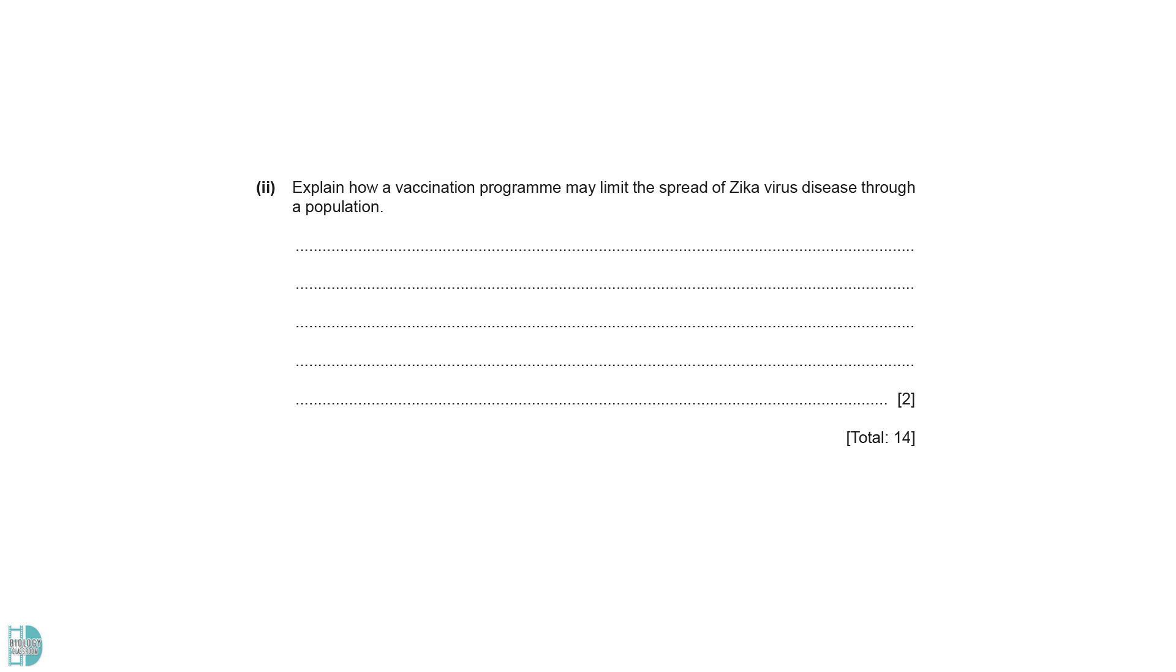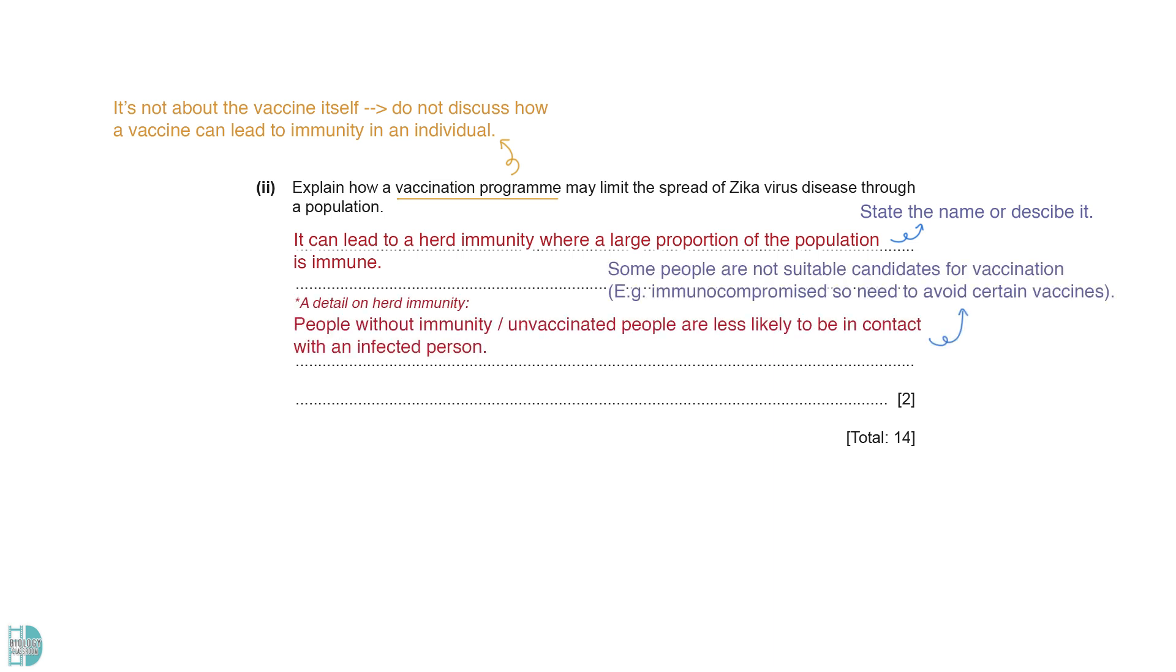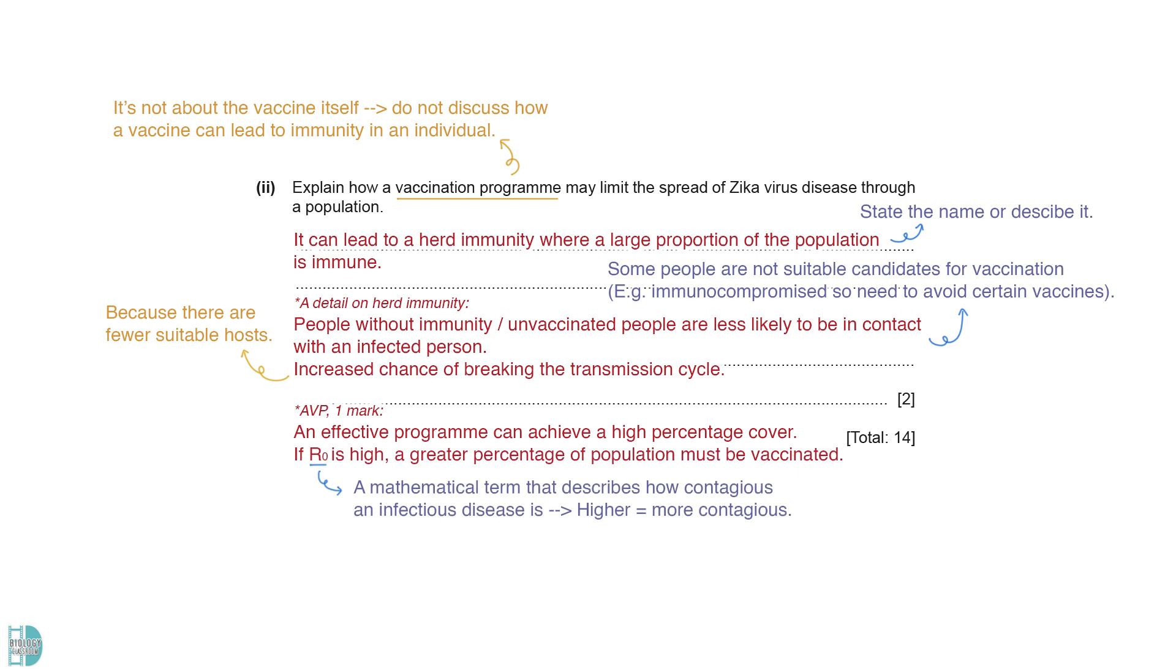Explain how a vaccination program may limit the spread of Zika virus disease through a population. This question talks about the program, not the vaccine itself. Therefore, do not discuss how a vaccine can lead to immunity in an individual. A vaccination program can lead to herd immunity where a large proportion of the population is immune. This will protect the unvaccinated people as they are less likely to be in contact with an infected person. This is important because there are individuals in a population who are not suitable candidates for vaccination. For example, those who are immunocompromised may need to avoid certain vaccines. When there are fewer suitable hosts, the likelihood of breaking the transmission cycle increases. There is a mark for AVP. You can discuss how an effective vaccination program may achieve a high percentage coverage. You can also relate the need for vaccination to the R-naught value, which is a mathematical term that describes how contagious an infectious disease is.